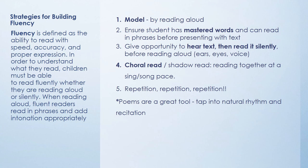To help students build fluency, model reading aloud and demonstrate what it's supposed to sound like using inflection and flow. Ensure that the student has mastered words and can read in phrases before presenting them with new text. Give opportunities to hear a text, then read it silently before reading it aloud — that way they're using their ears, their eyes, and their voice. Choral or shadow reading is when a tutor and student read together at a sing-song pace. Tons of repetition are needed, and poems are a great tool because of their natural rhythm.